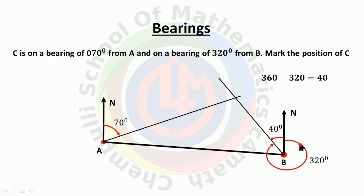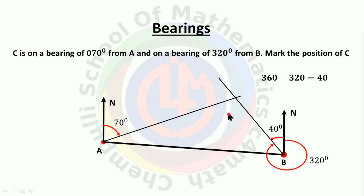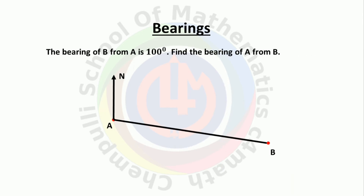We used the anti-clockwise 40-degree angle because a protractor's maximum is 180 degrees. Drawing that line gives the direction where the clockwise angle is 320 degrees. Now both lines — 70 degrees at A and 320 degrees at B — meet at a single point, which is the position of C.